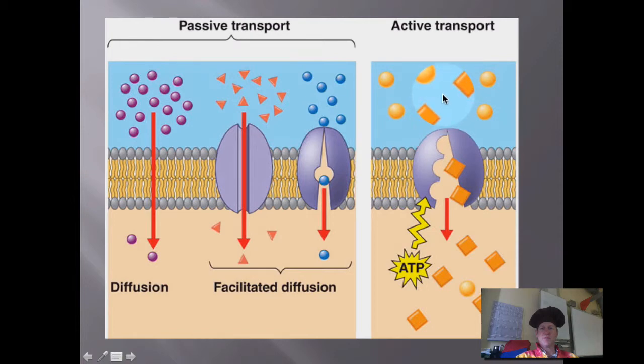Now active transport is moving against the gradient, because here we're going from low to high, so it requires energy in the form of ATP. So that's active transport.